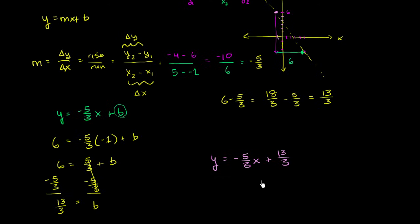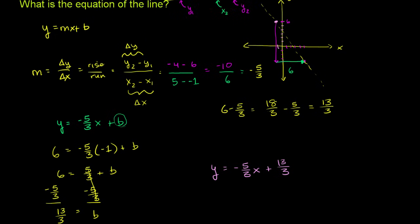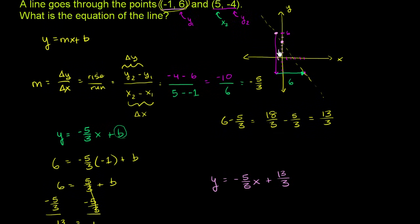We could write these as mixed numbers: 13 over 3 is 4 and 1 third. So the y-intercept is at 0 comma 13 over 3, or 0 comma 4 and 1 third. And even with my roughly drawn diagram, it does look like this. The slope, negative 5 thirds, is the same thing as negative 1 and 2 thirds — the slope is downward sloping, negative, and a little steeper than a slope of 1, but not quite negative 2.